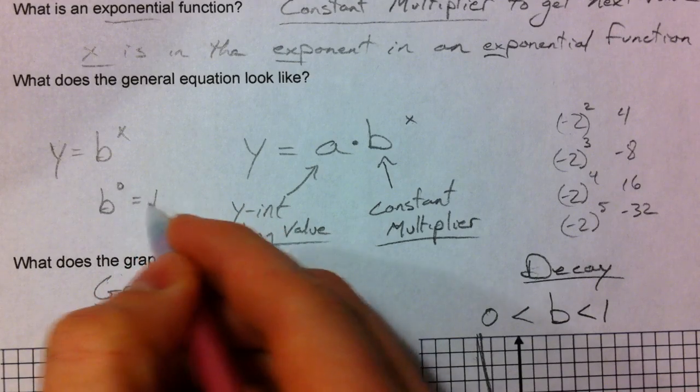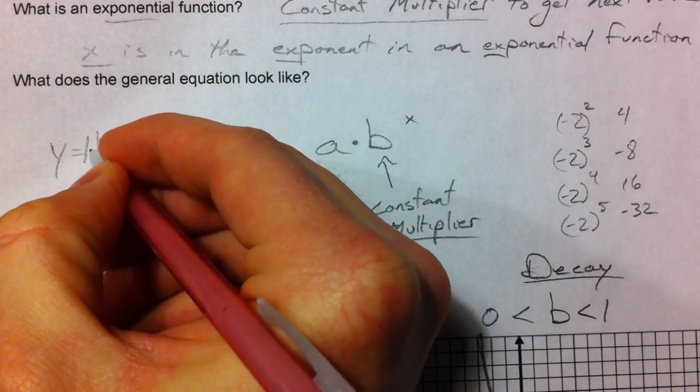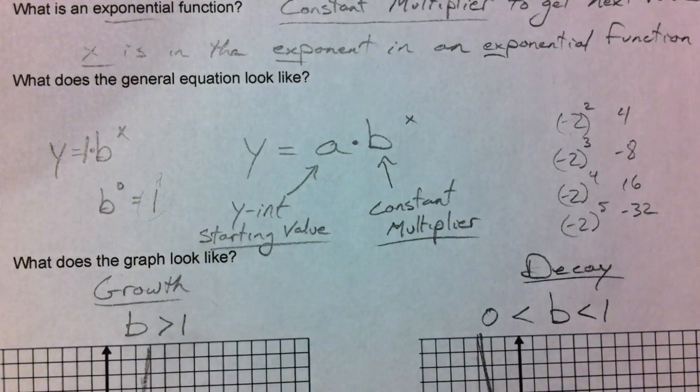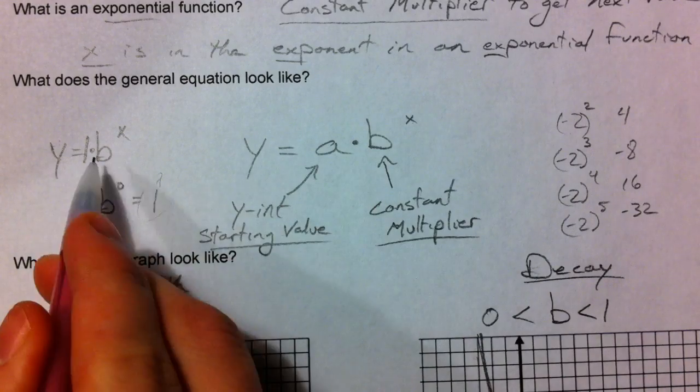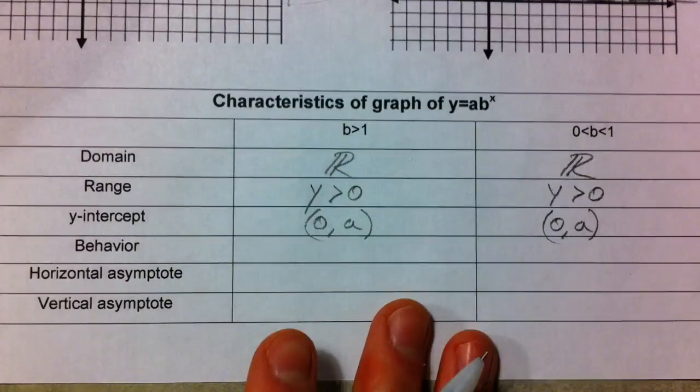And so, your y intercept, if you don't have an a, is 1. Because you can always write a 1 out front. 1 times b to the x. So, if you don't have an a value, 1 is your y intercept, because you can just plug in 0.